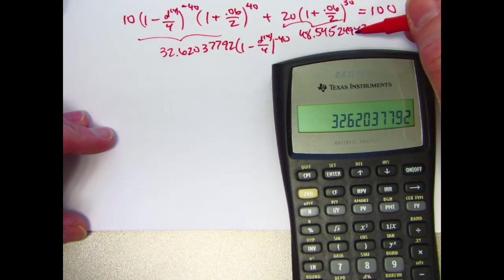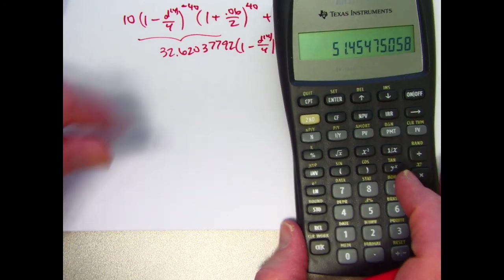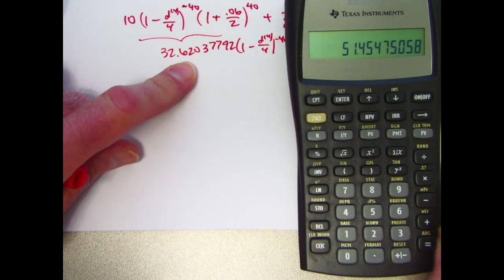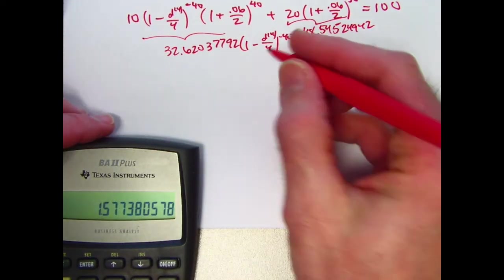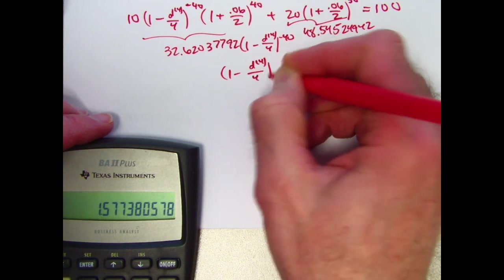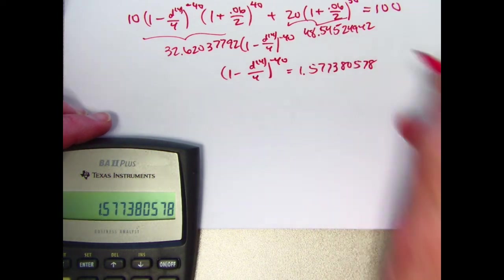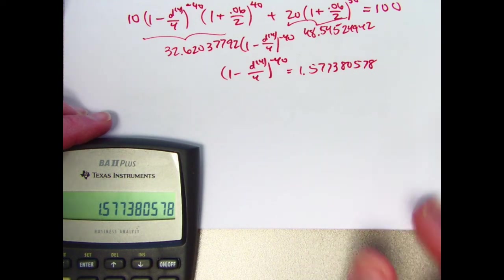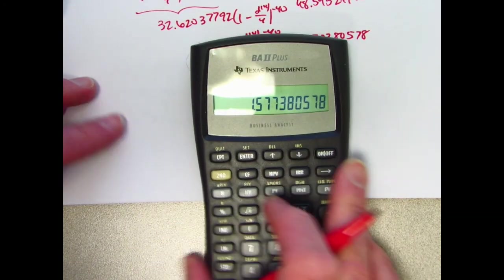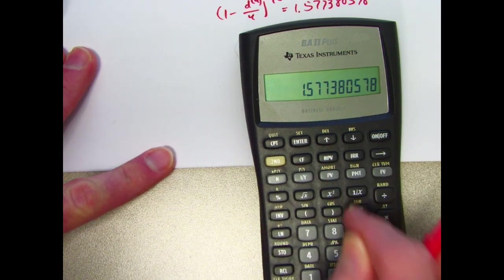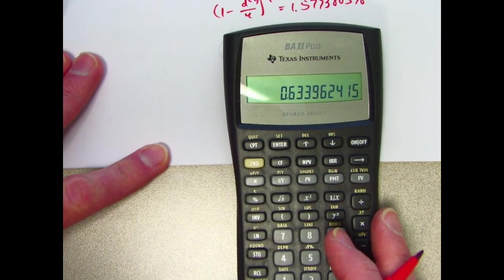I'm going to subtract 48.545 from both sides, so I'll take 100 minus what's in register 0 to get this. Then I've got to divide both sides by 32.620. Now I divide this by what's in register 1 to get that. So now I have the equation 1 minus d4 divided by 4 to the negative 40th power is 1.577380578. Again, if you're good at calculator usage, you don't actually have to write these things down. I could raise both sides to the negative 1 over 40th power, or I could first take the reciprocal of both sides, effectively on the calculator, take the reciprocal of this. Oops, wrong button. There we go. And raise that to the 1 over 40th power. Positive 1 over 40th power, which is 0.025. Raise it to the 0.025th power.